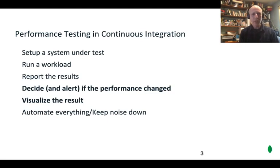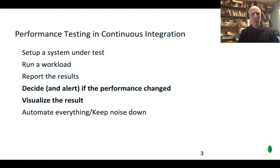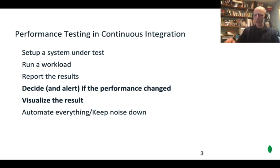So what do you need in order to test performance in a continuous integration system? Well, we need to set up the system under test, run the workload, report the results, then decide if the performance changed, visualize the results, automate everything, and do our best to keep the noise down. This talk is really focused on deciding if the performance changed. We've talked in other places about some of the other steps, and I have some links at the end of the talk. But this one is really about how do we do our best to decide and alert when the performance changes.